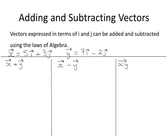Vectors expressed in terms of i and j can be added and subtracted using the laws of algebra. In this question, the vector x is 5i plus 3j and the vector y is 7i minus 2j.